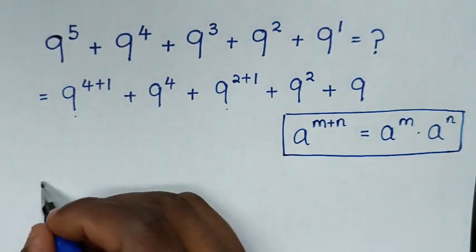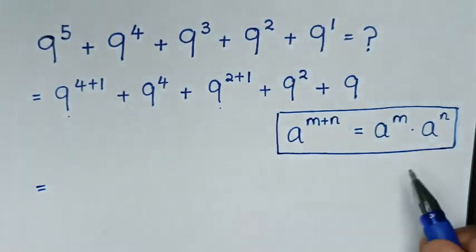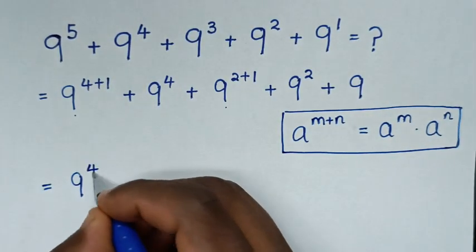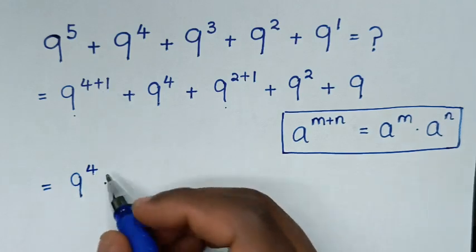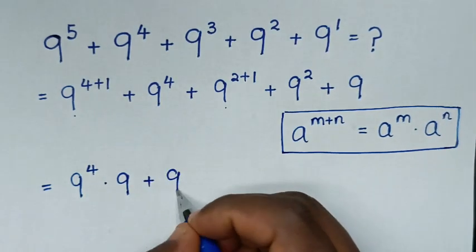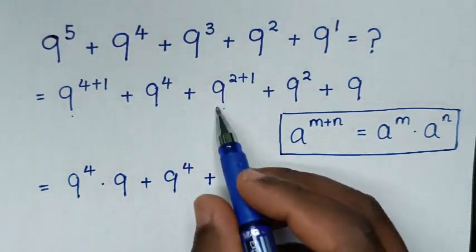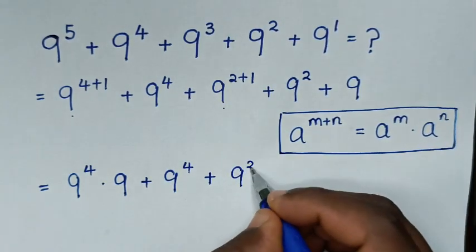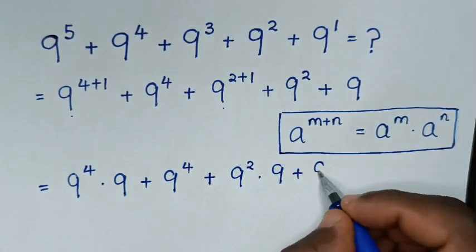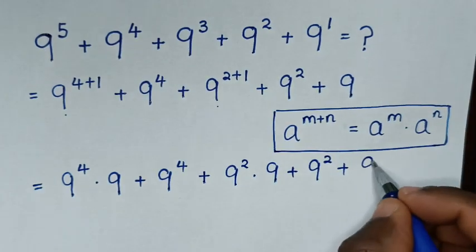So it will be equal to: from here, 9 power 4 plus 1 will apply this form. So it will be 9 power 4 times 9 power 1, which is 9. Then plus this 9 power 4, plus 9 power 2 plus 1, which gives 9 power 2 times 9 power 1, which is 9. Then plus this 9 power 2, then plus this 9.